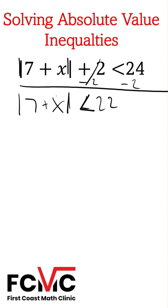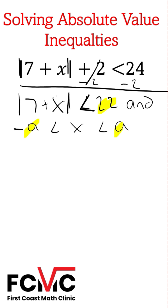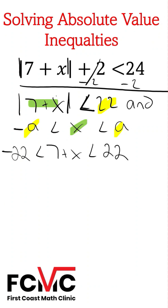Since this absolute value is less than, we can rewrite this using an and compound inequality. An and compound inequality takes the form: negative a is less than x, which is less than positive a. Here, a is going to be 22, and x is going to be the expression in our absolute value. We rewrite this as negative 22 is less than 7 plus x, which is less than positive 22.